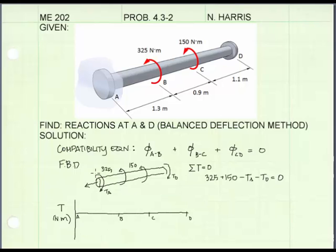So, at point A, we see that there is a reaction applied. It's in the negative direction. It's a magnitude T_A. So, right here at A, we're going to drop in a negative direction to T_A. The internal torque from A to B will be constant at a value of T_A. At B, we have a 325 newton meter positive torque applied, so we're going to get a jump up.